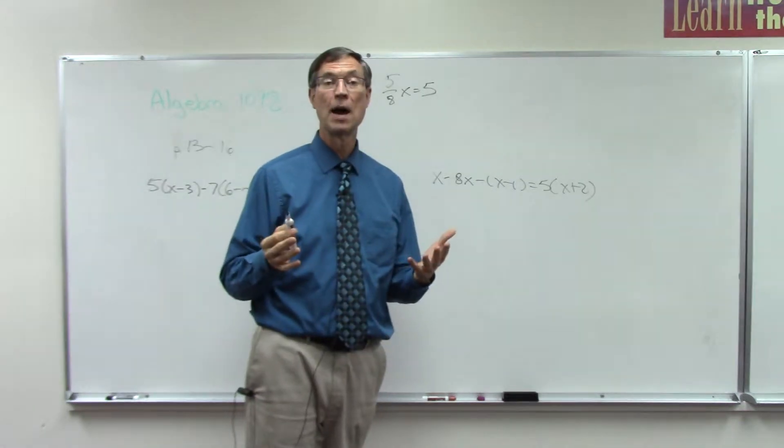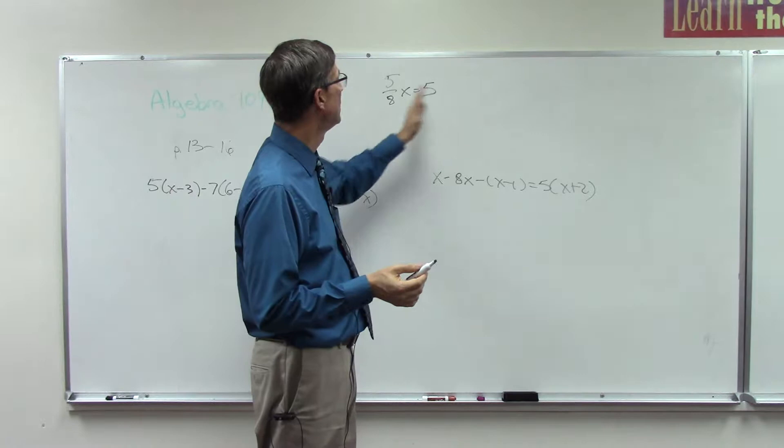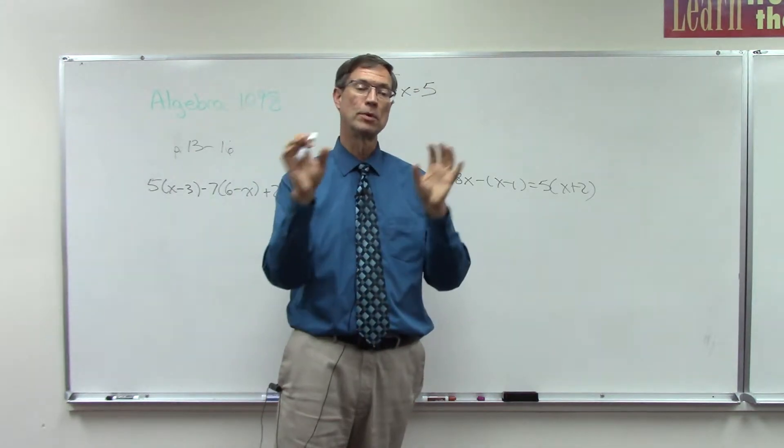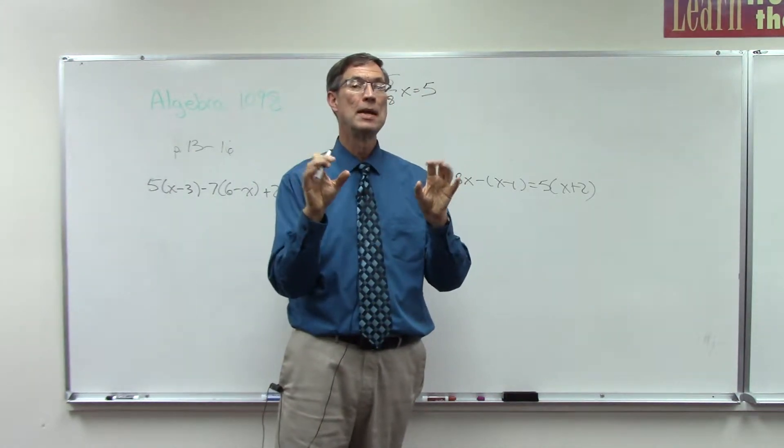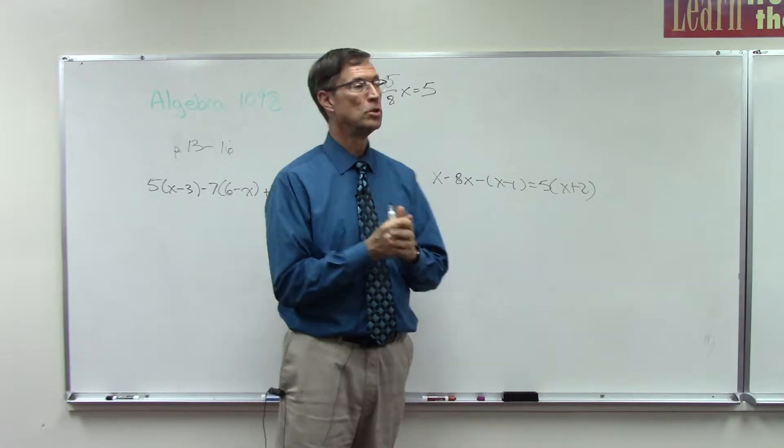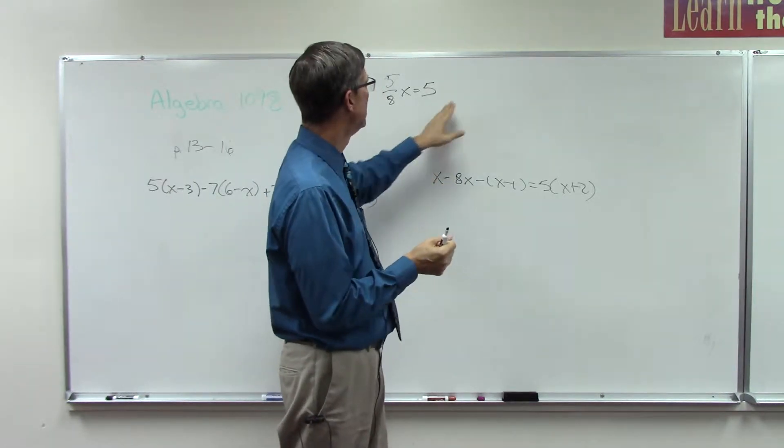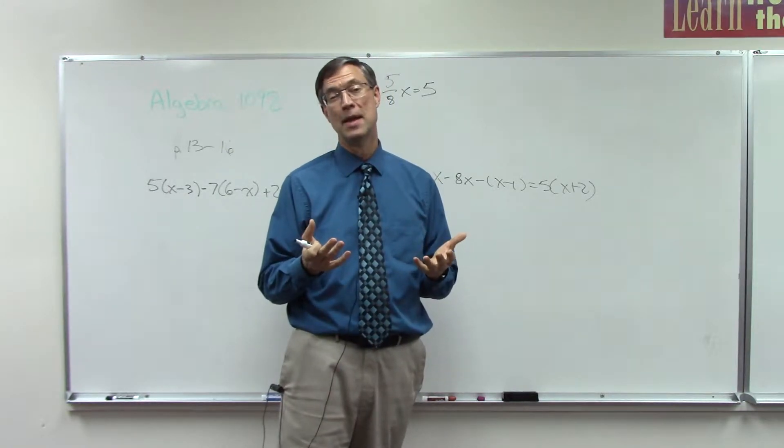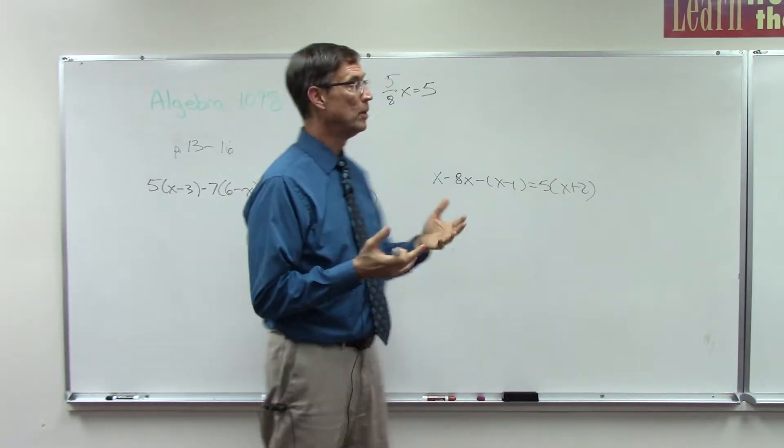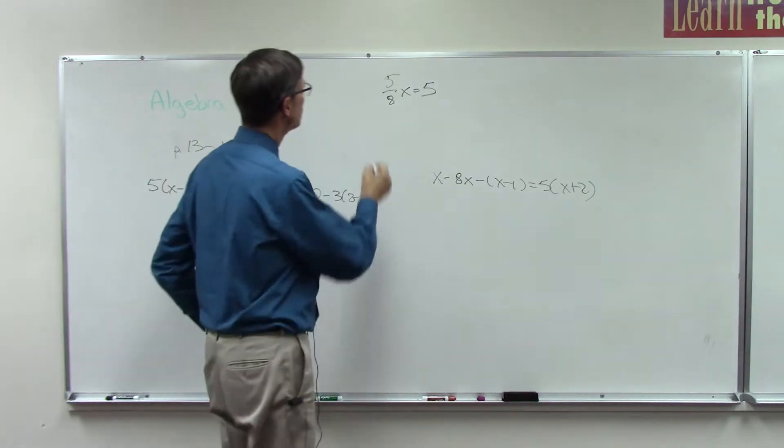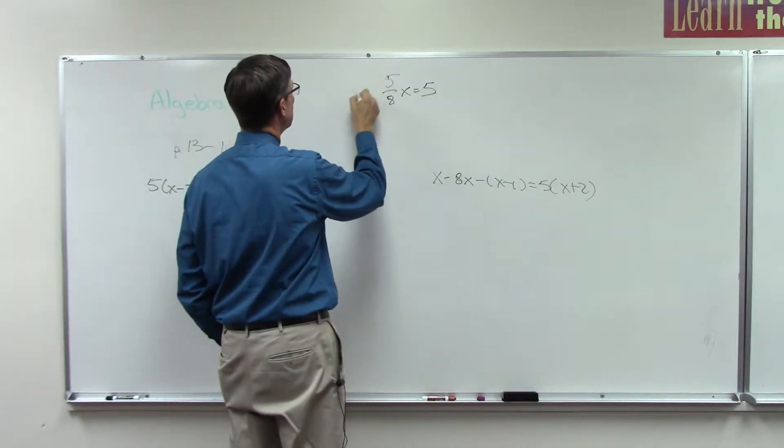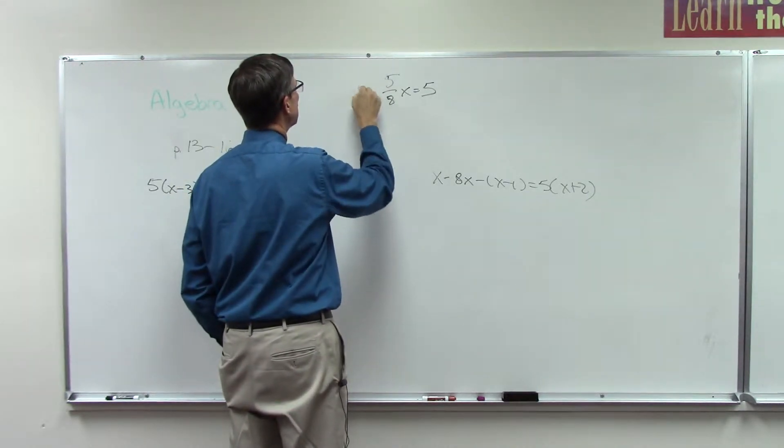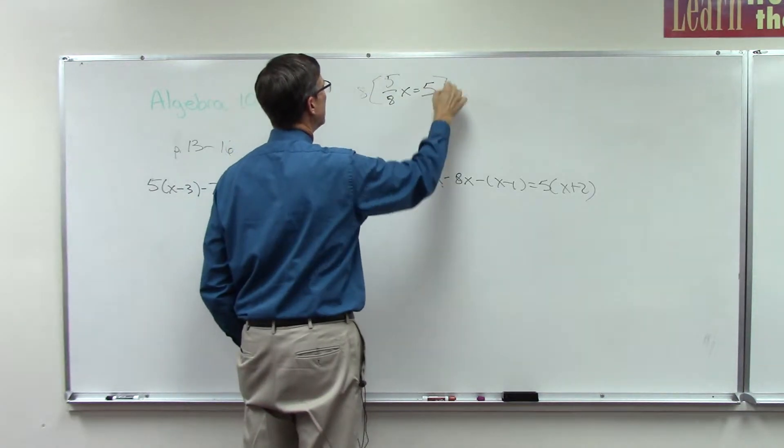You find the common denominator. So in other words, if we had fractions on both sides, we would look at both of those denominators and get a common denominator. For instance, if I had 8 over here, and like 1 third over here, then I would want to use 24. But whatever the common denominator is, in this case it's 8, I'm just going to multiply the entire equation, this marker isn't working too great, times 8.